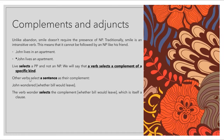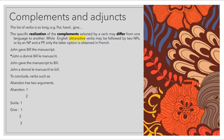Other verbs select a sentence as their complement. For example, 'John wondered whether Bill would leave' — 'whether Bill would leave' is the complement of the verb 'wonder,' and it is itself a clause. The list of verbs is very long: put, hunt, give, etc. The specific realization of the complements selected by a verb might differ from one language to another. For example, ditransitive verbs in English may be followed by two NPs or by an NP and a PP.